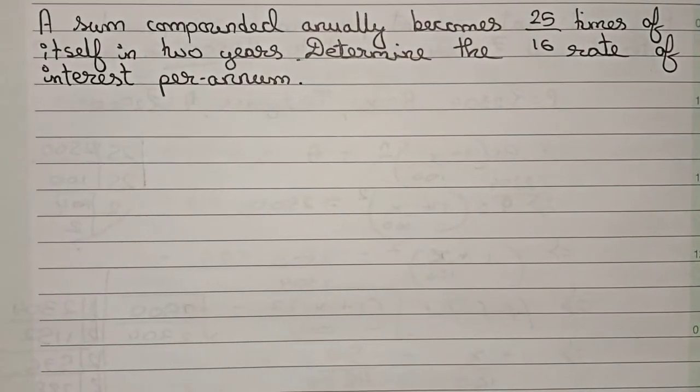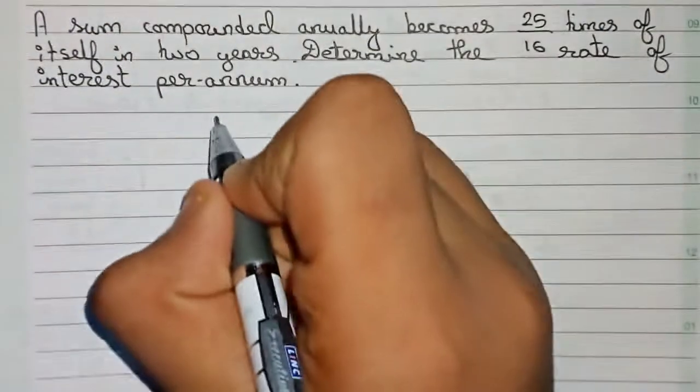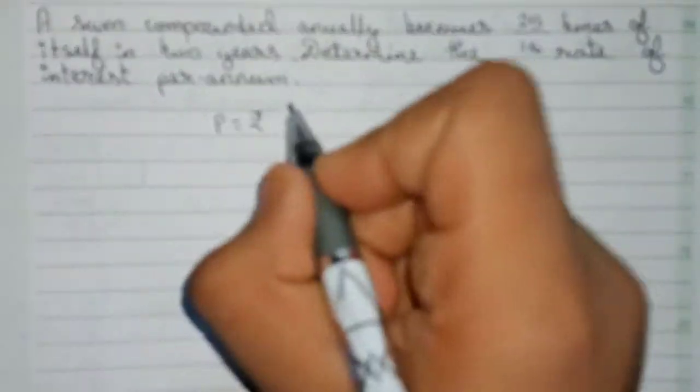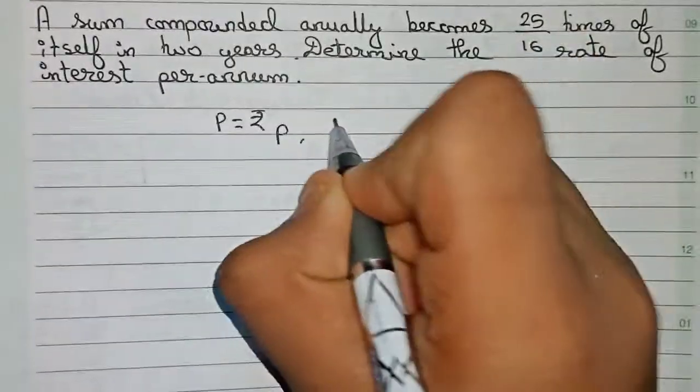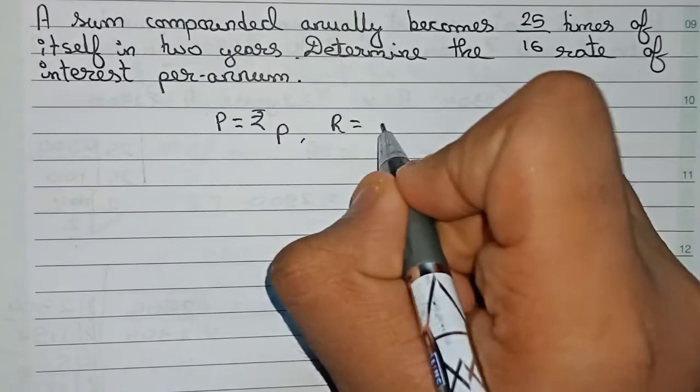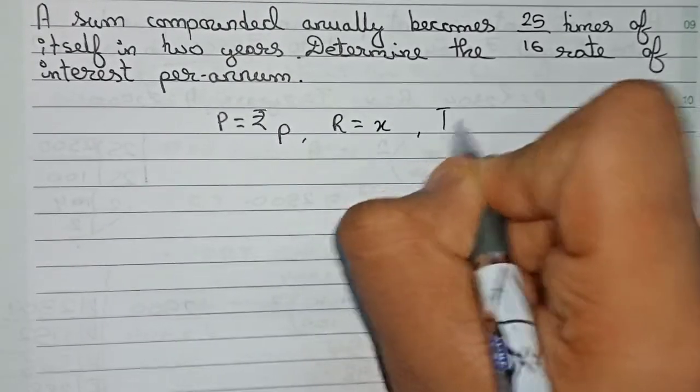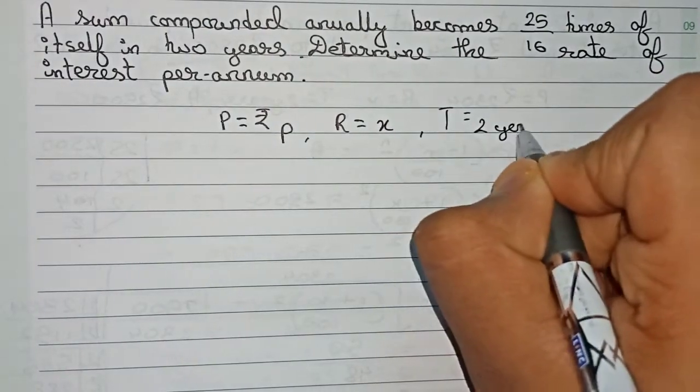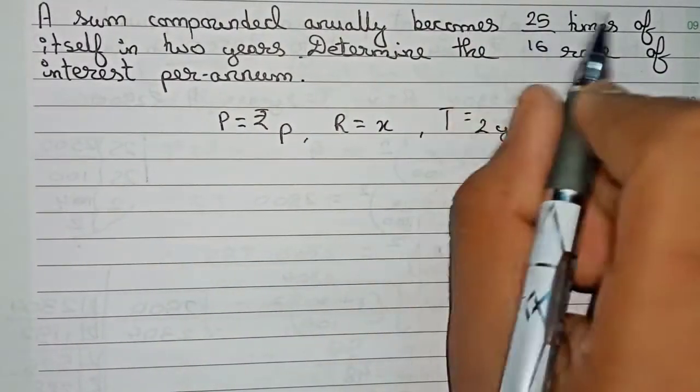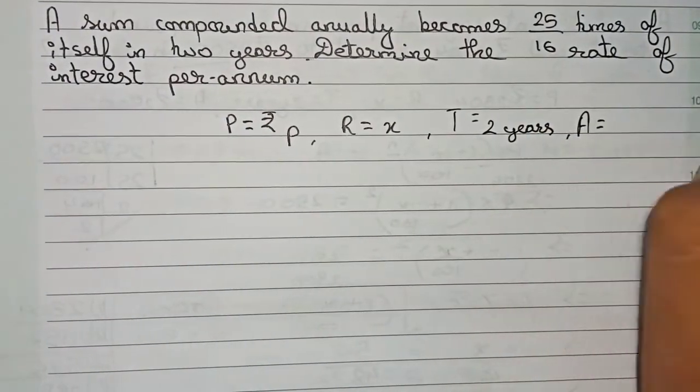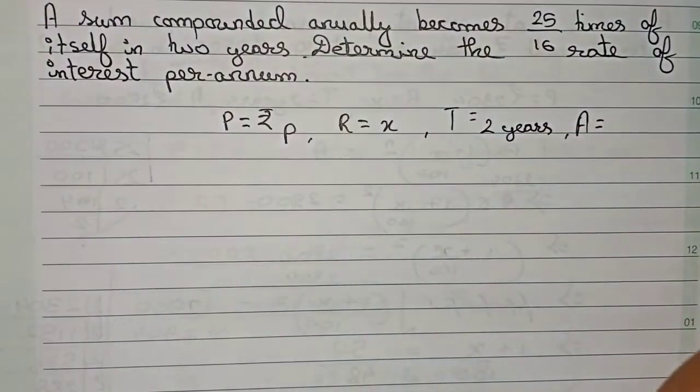First, you read all the information that has been given. First, the principal is equal to rupees P, since no principal is given. The rate of interest is also not given, so you write rate of interest is x. Time is given as two years.